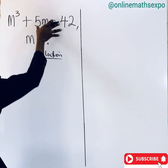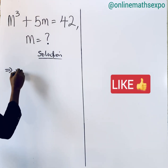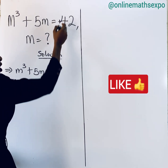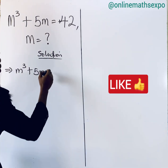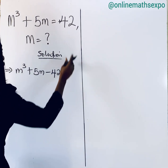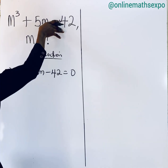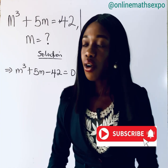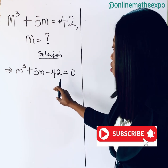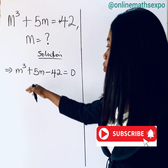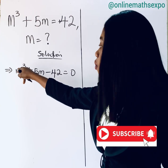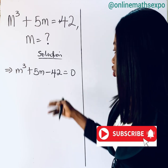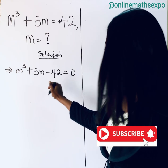We begin with the equation: m³ + 5m − 42 = 0. We subtract 42 so it becomes zero on the right side. Now we ask ourselves: what numbers can we assume to be the value of m so that when substituted into this equation, it equals zero? Those numbers come from the factors of 42.